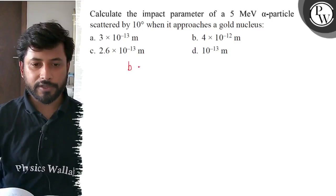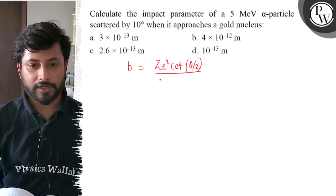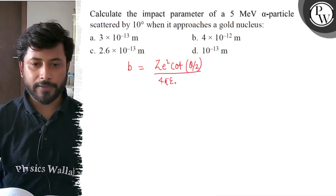So, the impact parameter formula is Z E square cot theta by 2 divided by 4 pi epsilon naught into kinetic energy.